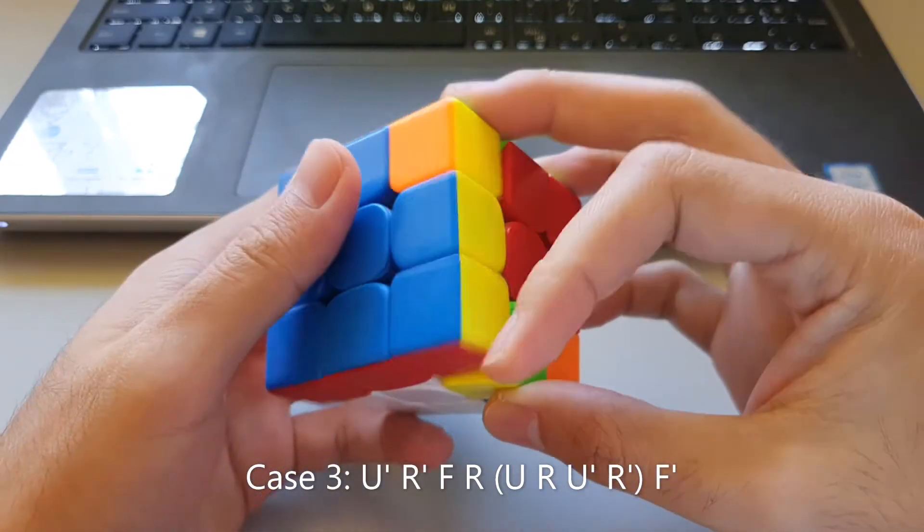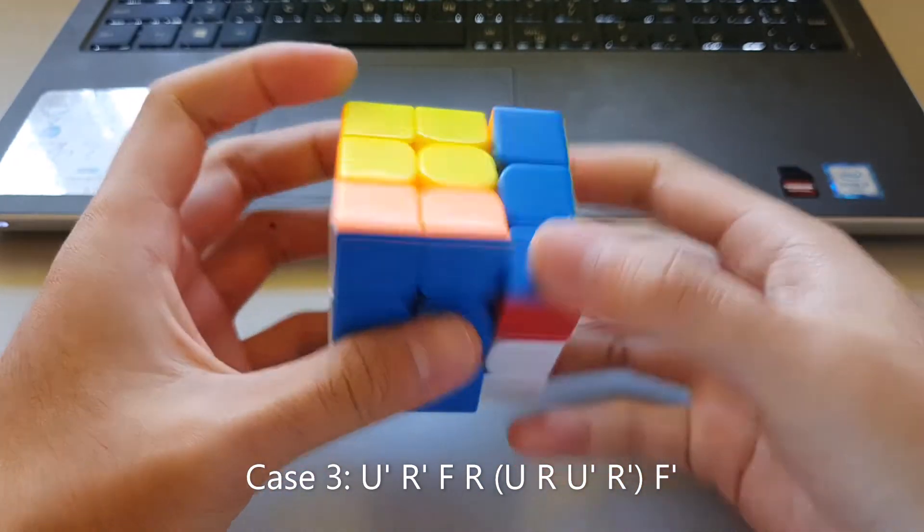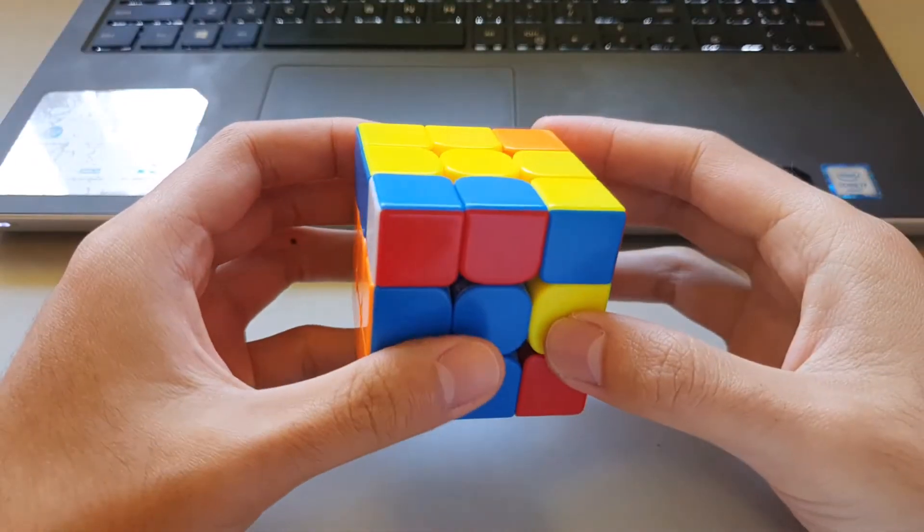So there's the R', F', R and before you do the final F' you want to do an inverse sexy here and then finish off with the F'.